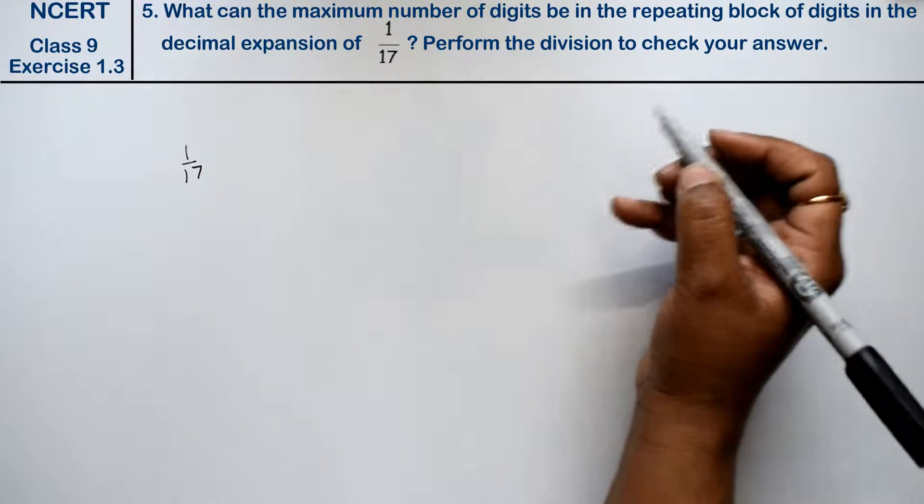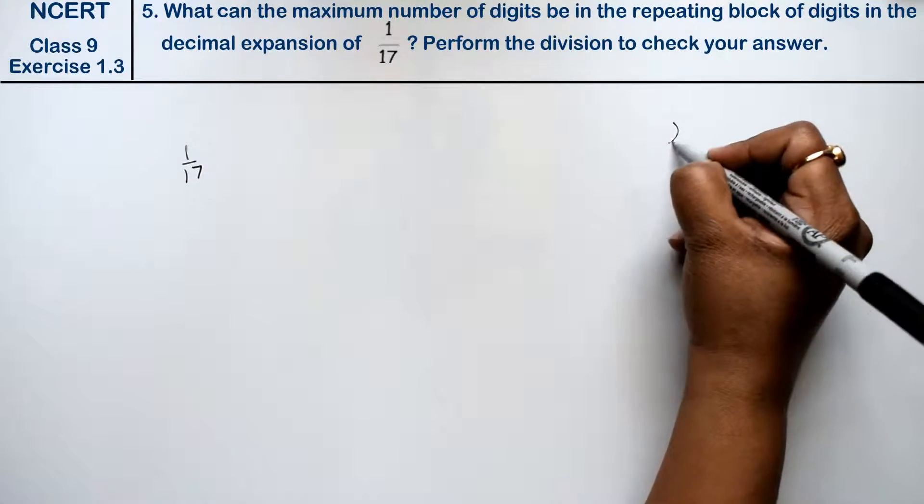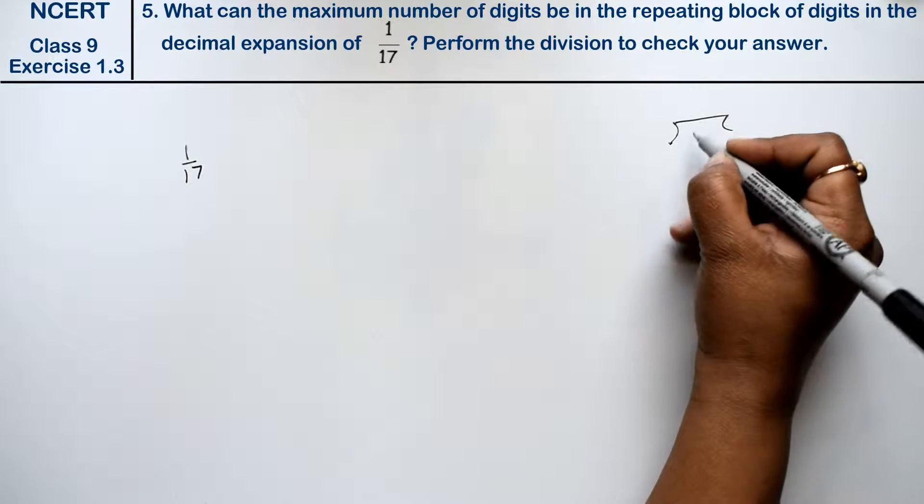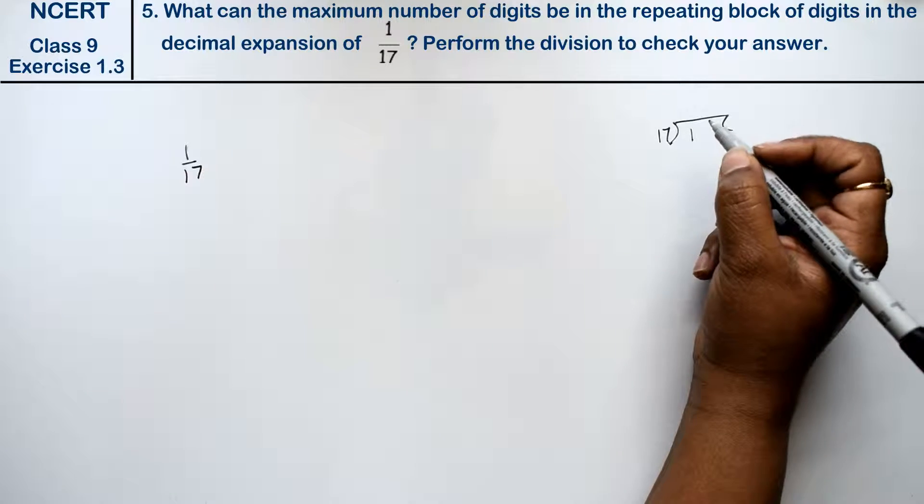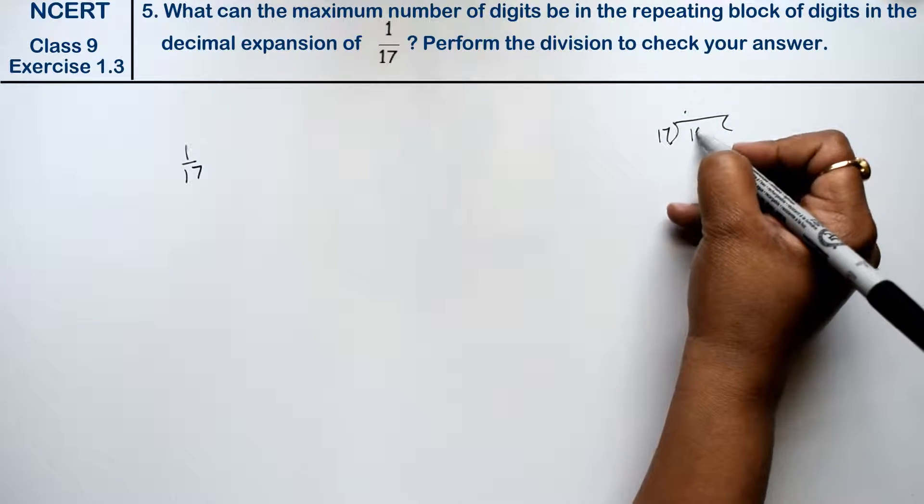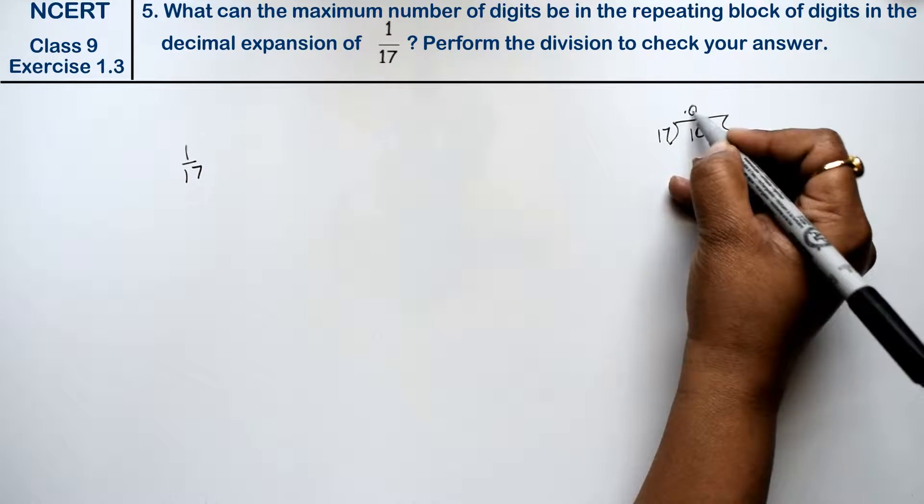Friends, we have to divide it and see where the repeated value occurs. Right friends, see, we write 1 divided by 17 with a decimal point and 0. It is too small, so we will add another 0.